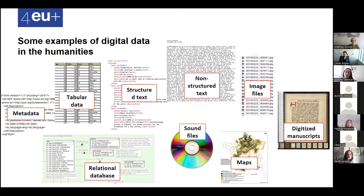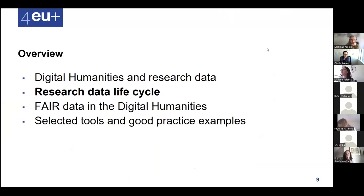Sometimes we hear that in humanities you don't produce data — but that's not true. You have many types of data: metadata, text, images, sound. You have many data on your computer even if you are not in mathematics or physical studies.